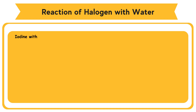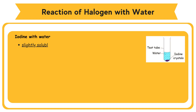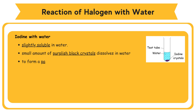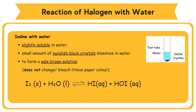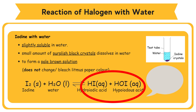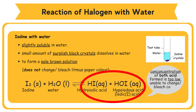For iodine with water: iodine is only very slightly soluble in water. Only a very small amount of purplish-black crystals dissolves in water to form a pale brown solution. This solution does not change blue litmus paper to red or bleach it. Iodine reacts with water to become hydroiodic acid and hypoiodous acid (iodic-1-acid). The concentration of both acids formed is too low, so it is unable to change the color of blue litmus paper or bleach it.